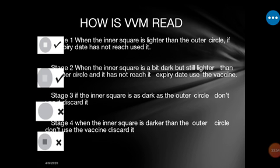Stage three — if the inner square is as dark as the outer circle, do not use it; discard it. At this stage, you cannot distinguish a difference in color between the inner square and the outer circle — they are all the same color, meaning the vaccine is damaged.